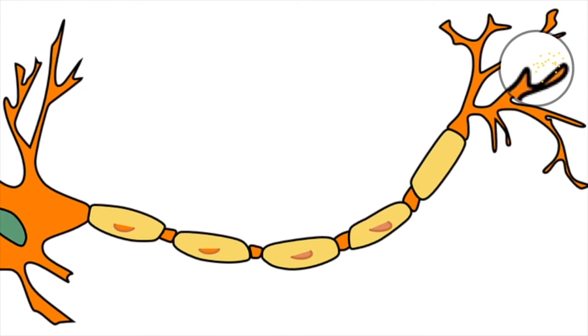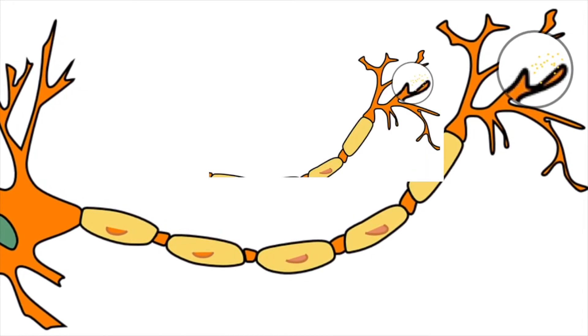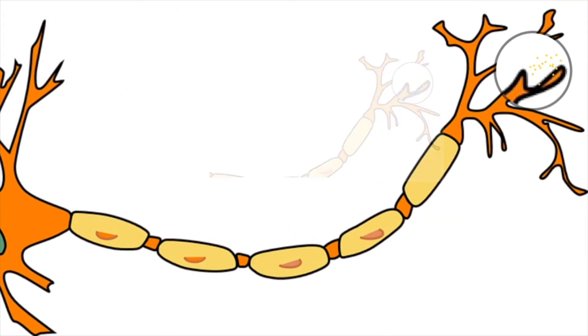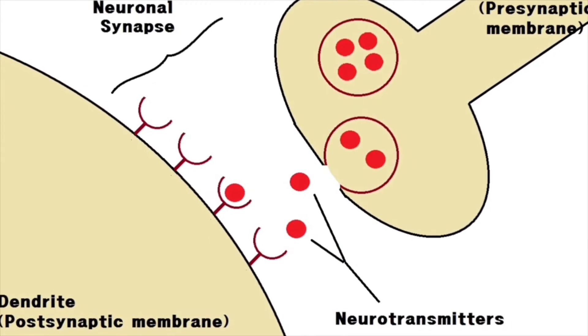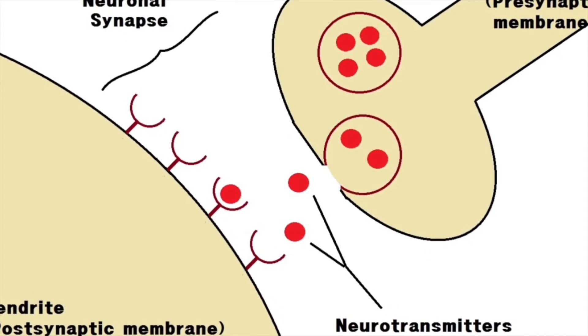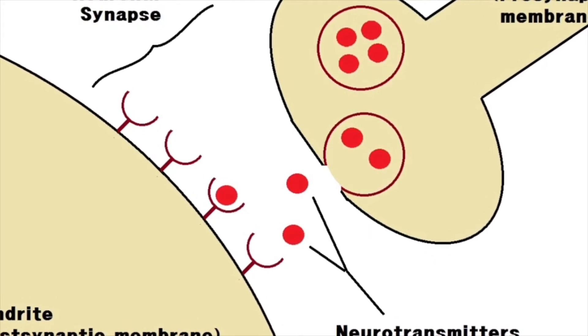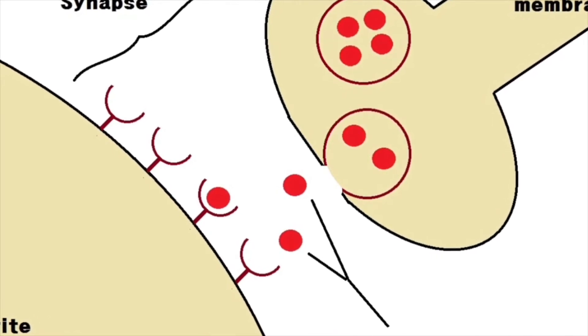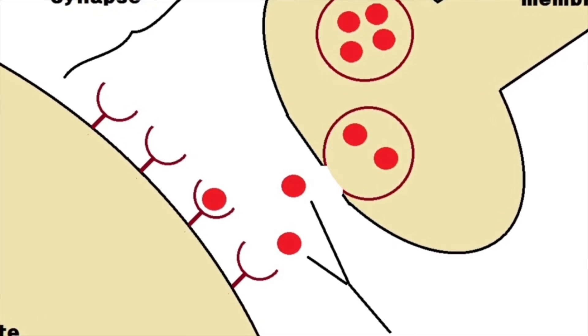At the end of the axon is a synaptic terminal. Most synapses function by converting the electrical signals it receives into neurotransmitters. These neurotransmitters then go and bind onto other receptors to then be processed to carry out the signal's initial purpose.